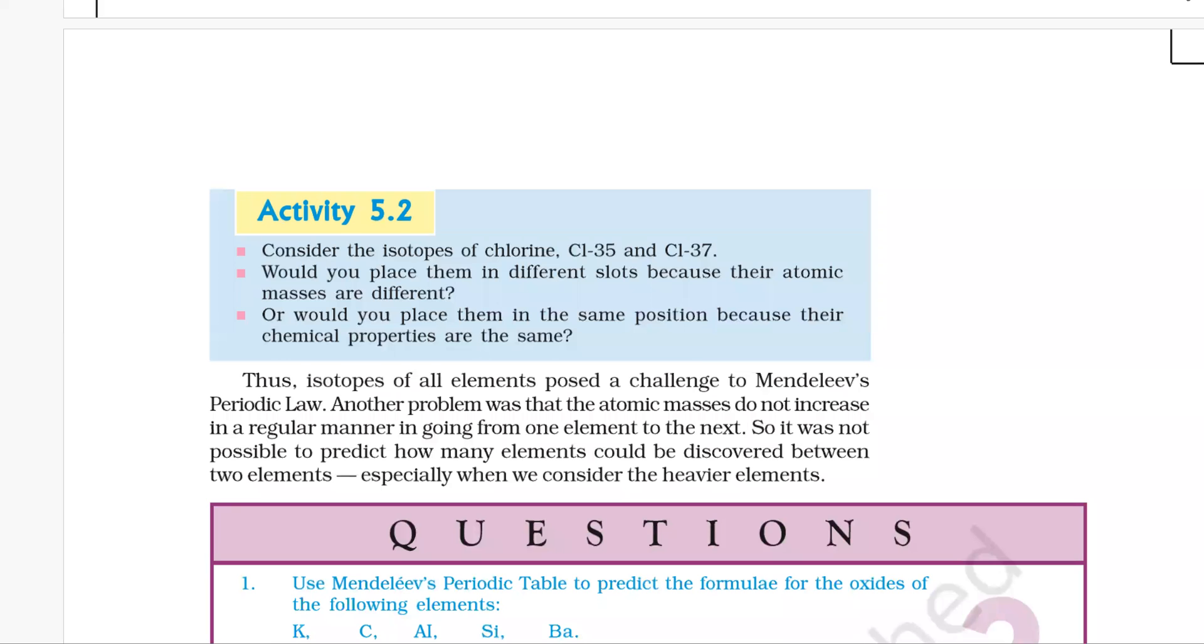Activity 5.2: Consider isotopes of chlorine-35 and chlorine-37. Would you place them in different slots because their atomic masses are different, or would you place them in the same position because their chemical properties are the same?